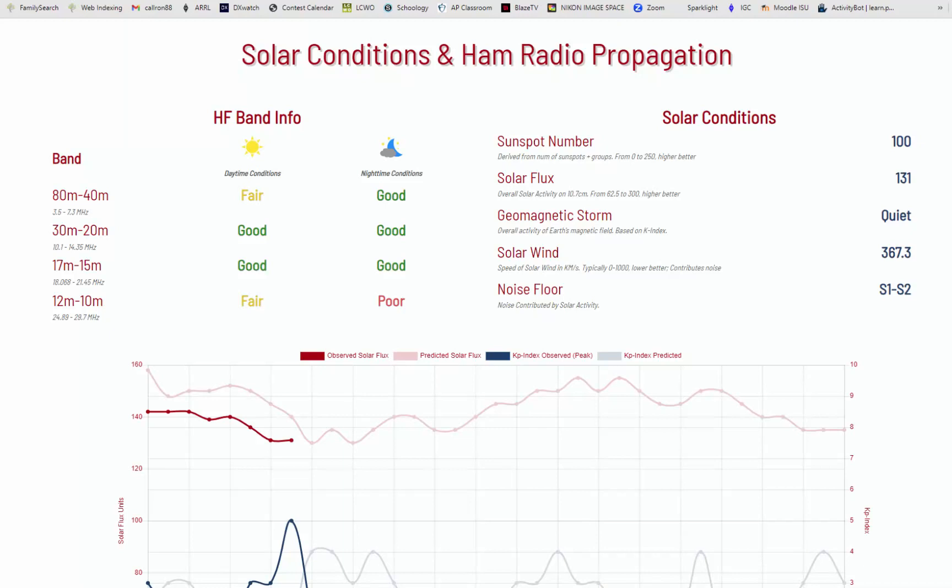Here's another website, solar conditions and ham radio propagation, that also show sunspot number, solar flux index, geomagnetic storm prediction, and which bands at which times of day will be good for propagation. So the next question is, at what point in the solar cycle does the 20 meter band usually support worldwide propagation during daylight hours? 20 meters is kind of a workhorse band. It's good generally all the time. Daylight hours, it's good to go at any point in the solar cycle.